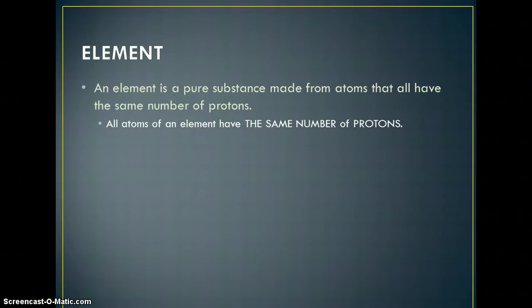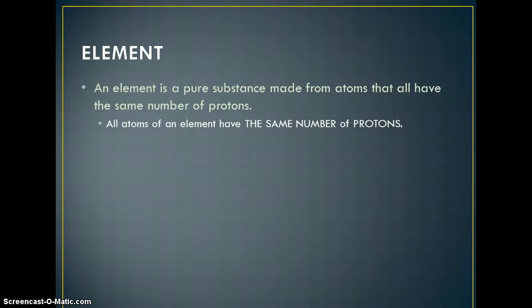The first definition we're going to talk about is the element. When you're looking at the periodic table, any of those little squares contains information about an element. An element is a pure substance made from atoms that all have the same number of protons. So every single atom in that element always has the same number of protons.